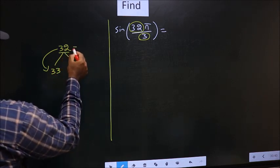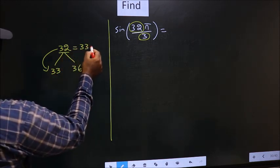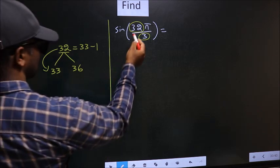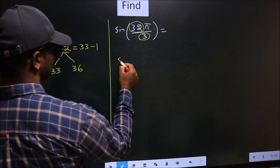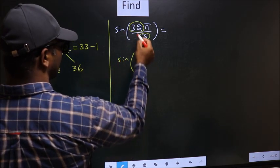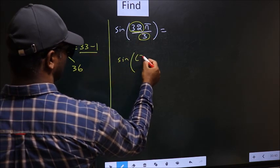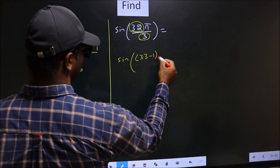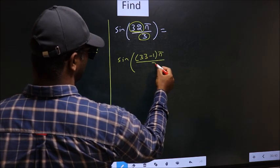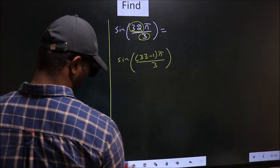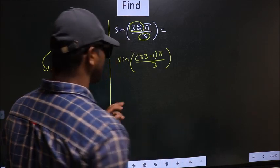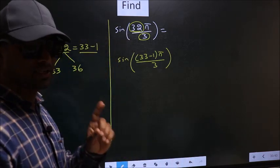So 32 should be written as 33 minus 1. So this will change to sin of 33 minus 1 pi by 3. Now I write this: 33 minus 1 pi by 3. This is your step 1.